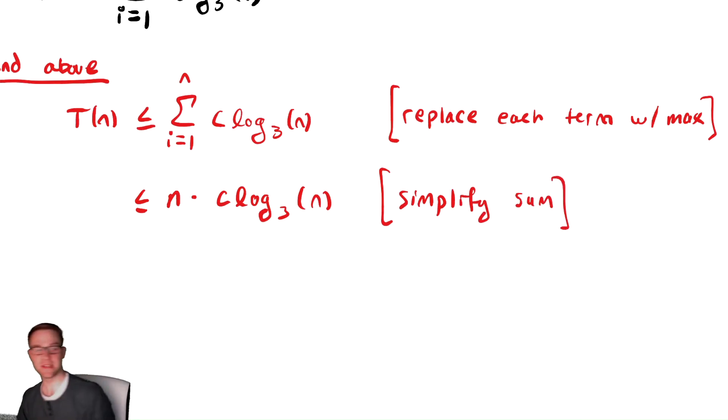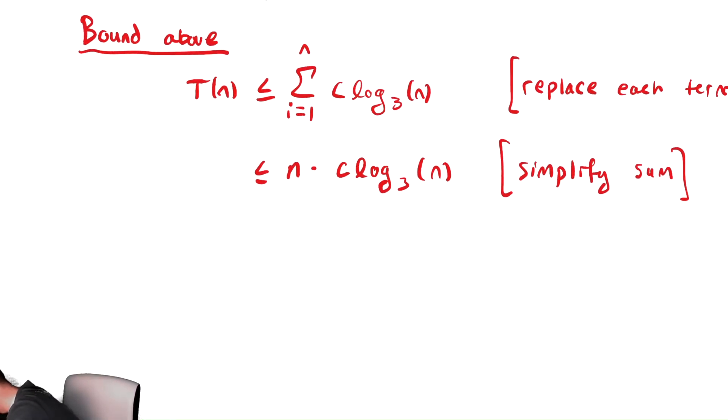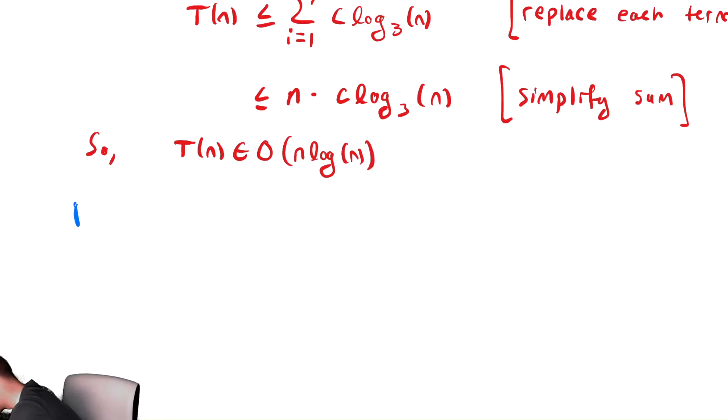We can take the sum and C log base 3 of n and multiply by the number of terms. So with those two things done, we can now see that that is in big O of n log n. So T of n is in big O of n log n. And now we need to bound below. To bound this below, we're going to split the summation in half.